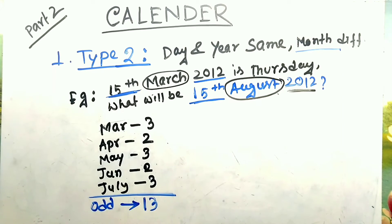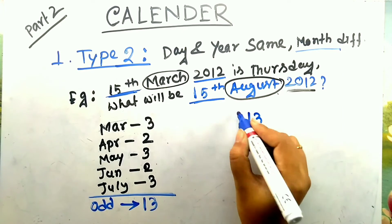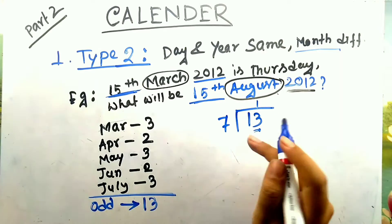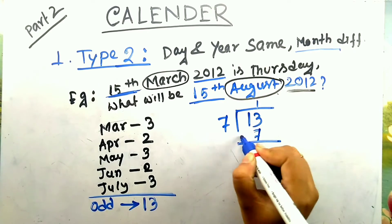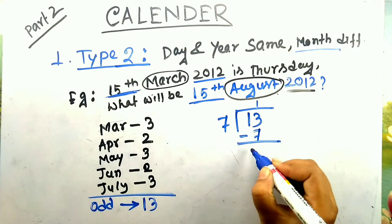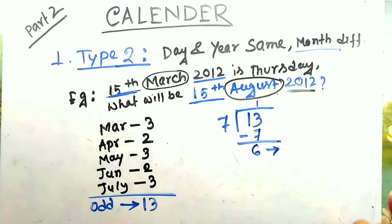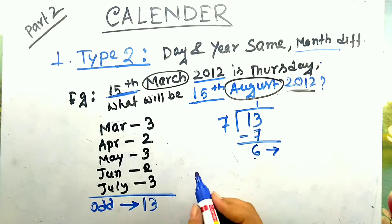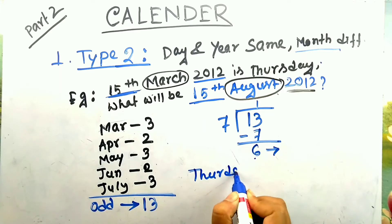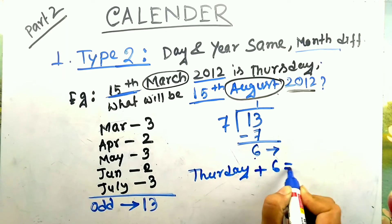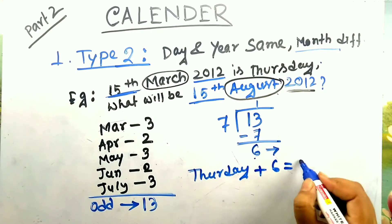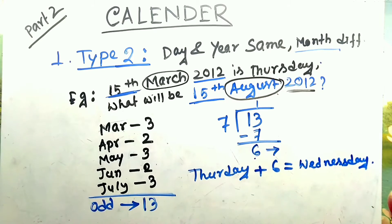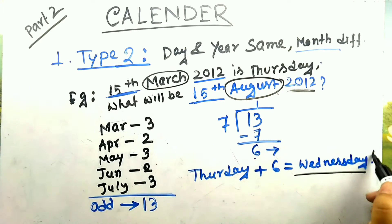So odd days total 13. Divide 13 by 7: 7 ones are 7, remainder is 6. Now add this 6 to the given day Thursday. Thursday plus 6 is nothing but Wednesday. So your answer is Wednesday.